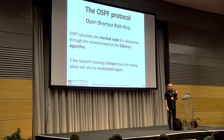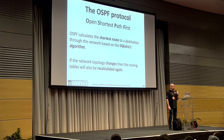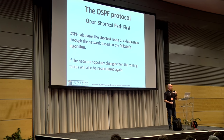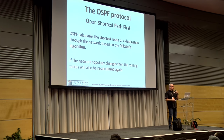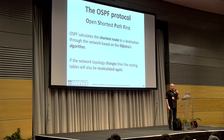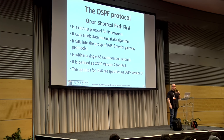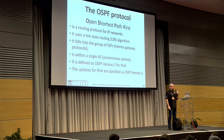OSPF — Open Shortest Path First — calculates the shortest route to a destination through the network based on the Dijkstra algorithm. When the network topology changes, the routing table is recalculated. This is how OSPF works in RouterOS — in just a few seconds. It is a routing protocol for IP networks.